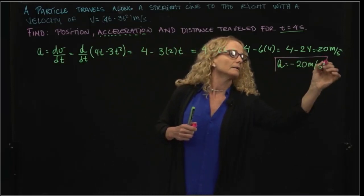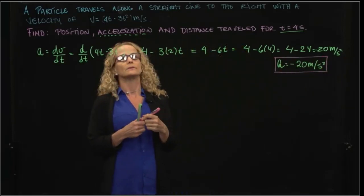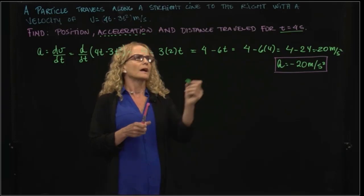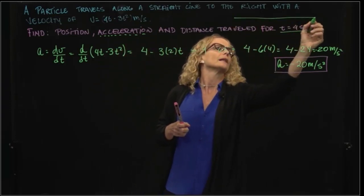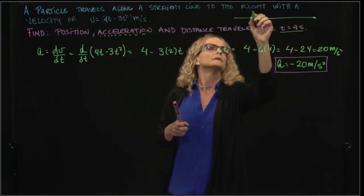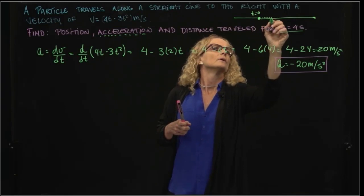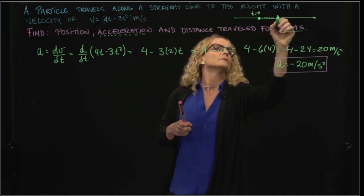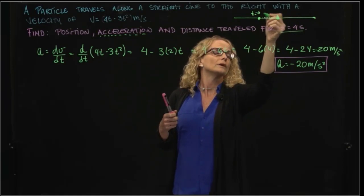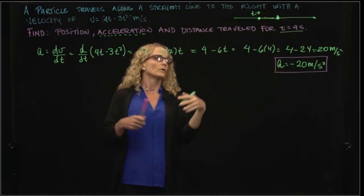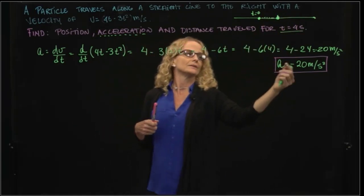What does that mean, the negative sign? Particle is decelerating. So we can imagine that we are traveling in a straight line. This is t = 0, and this is our particle. And even though it is traveling in one or the other direction, it's decelerating.